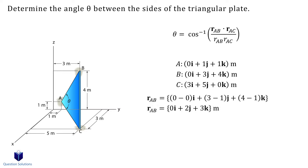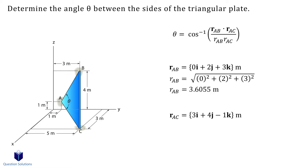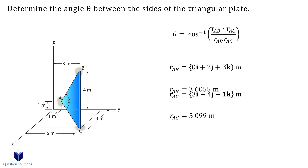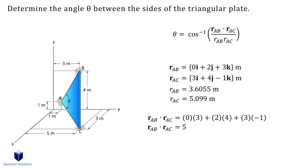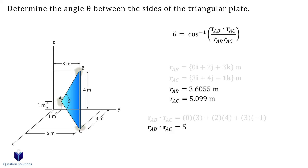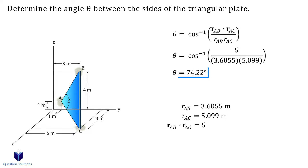Let's simplify. Next, a position vector from A to C. Now we need to find the magnitude of these position vectors. Next, we will take the dot product between the two position vectors — multiplying i components by i components, j components by j components, and k components by k components. The result is a scalar value. Now all that is left is to plug everything into our equation. Solving gives us our answer.